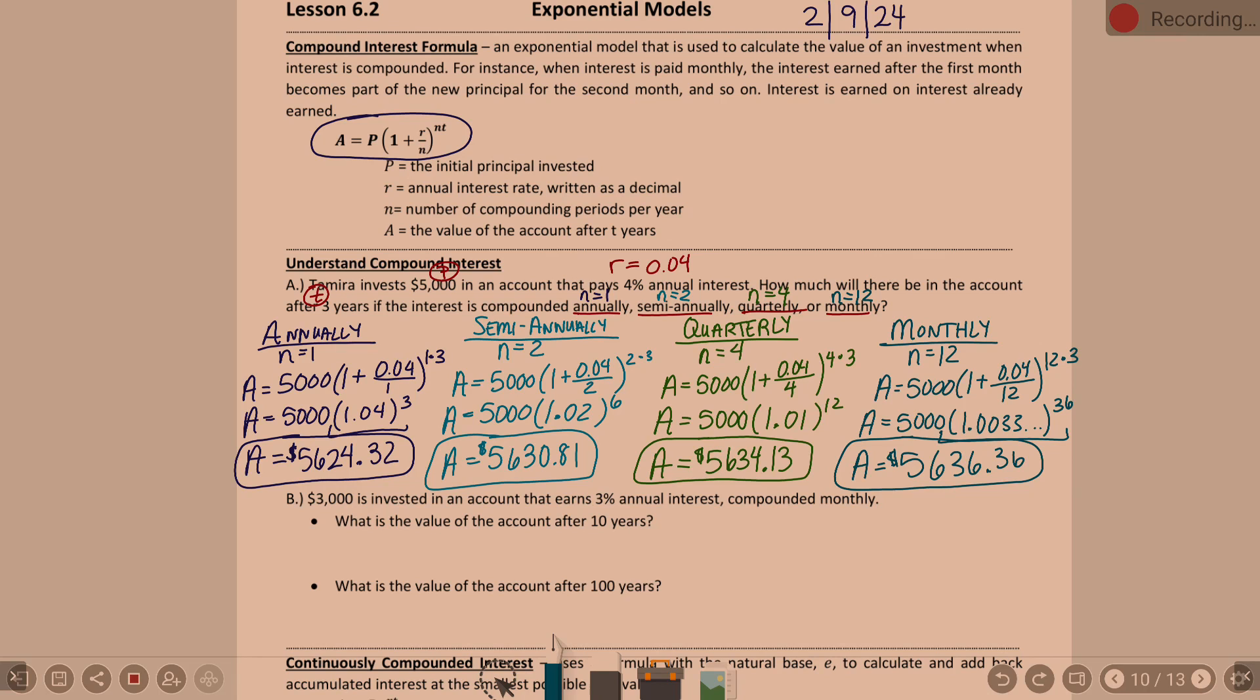What happened with each of our values? Each time n got bigger, what happened? What happened to our answers? They were increasing, right? The more often you compound interest, the bigger your value is going to become. It's not a big difference, is it? But, over time, it adds up.